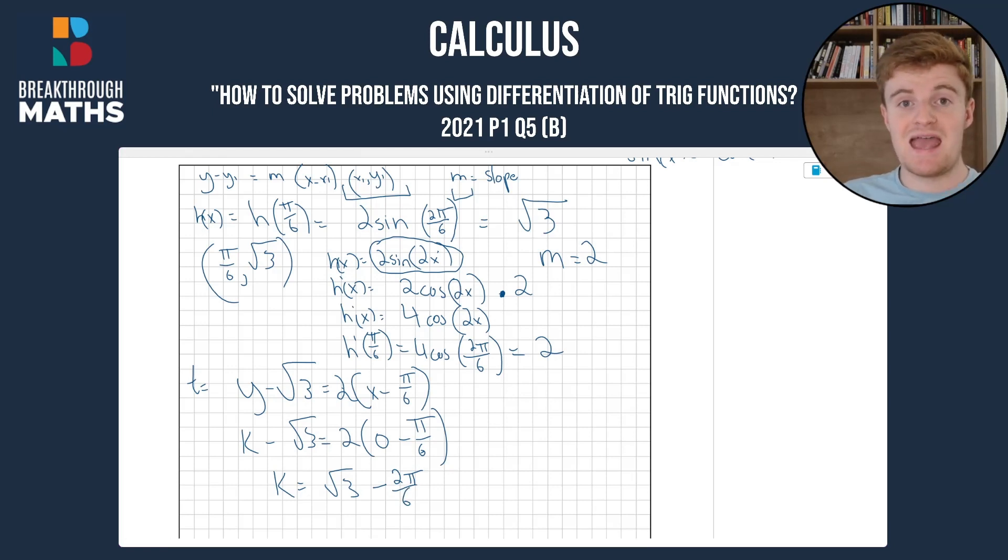So now we've isolated k. Now we're going to put this into our calculator and again make sure it's in radians. And what you're going to get is k = 0.6848 and it's at two decimal places. So k = 0.68.